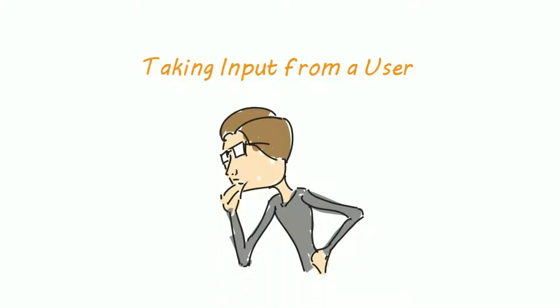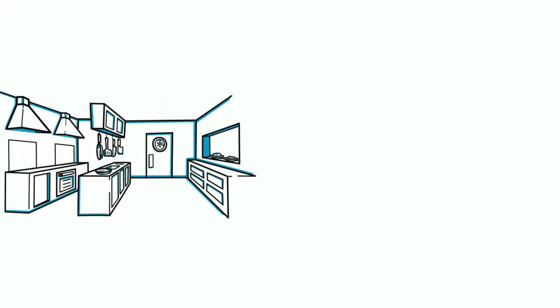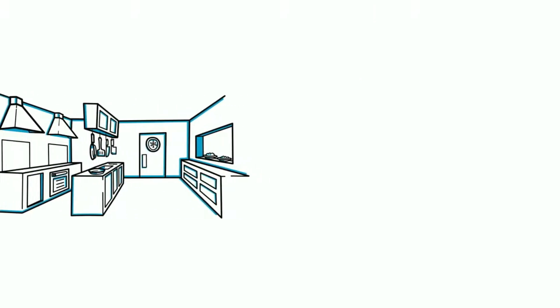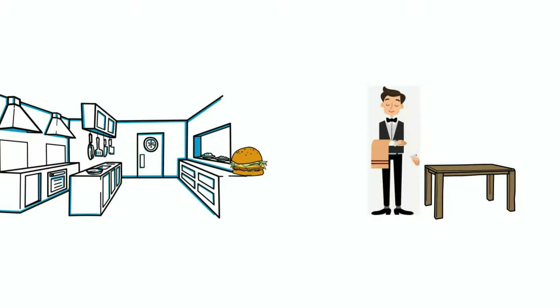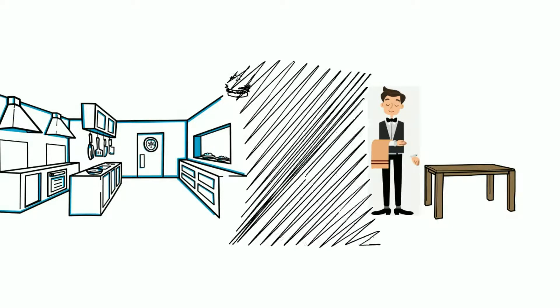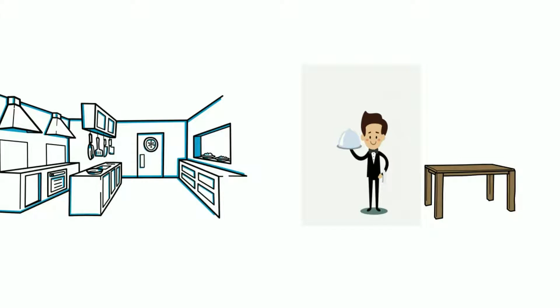Hi guys. Taking input from a user in Java seems a bit complicated at first. To easily remember and understand this concept, you need to understand how a restaurant works. Suppose you are in a restaurant and the waiter approaches your table and takes your order. After taking your order, the list is given to the chef. And when your food is ready, they give a token number to your food, and by looking at that token, the waiter properly serves the food on the correct table.